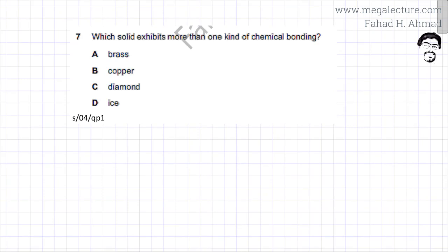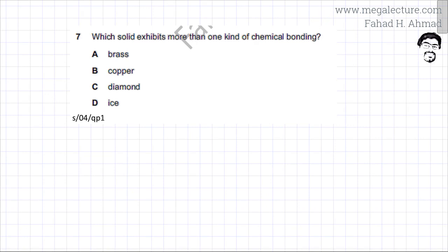The question asks which solid exhibits more than one kind of chemical bonding. The first option is brass, which is a mixture of copper and zinc — it's an alloy.